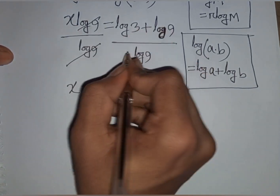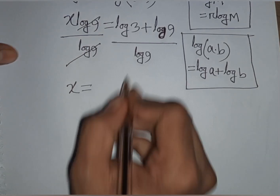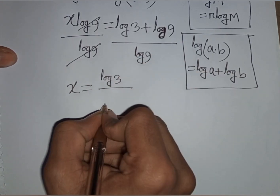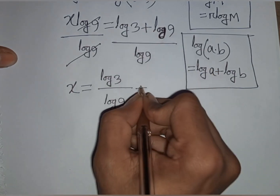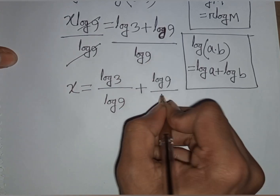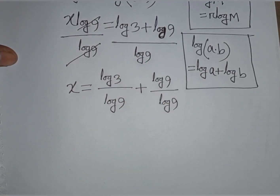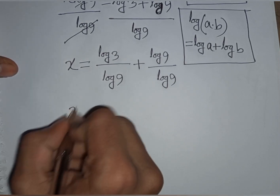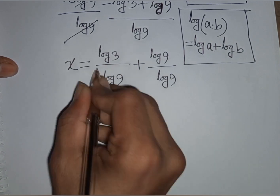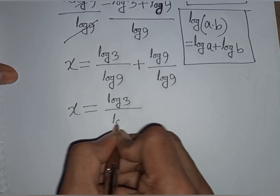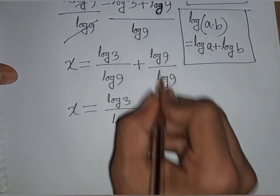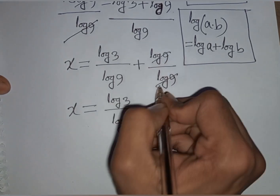So x is equal to log 3 over log 9 plus log 9 over log 9. Now log 9 can be written as log 3 power 2, giving us log 3 over log 3 power 2, then plus log 9 divided by log 9. This last term will cancel to give 1.